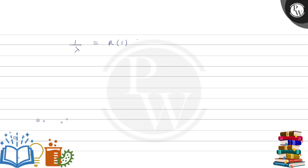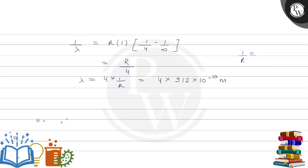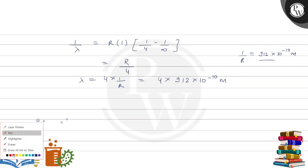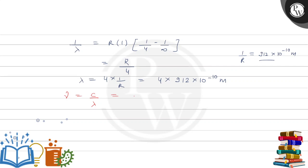We get 1/λ = R × (1/4 − 1/∞) = R/4. Therefore λ = 4/R. Putting the value of 1/R = 912 × 10⁻¹⁰ m, we get λ = 4 × 912 × 10⁻¹⁰ m. Now frequency ν = c/λ = (3 × 10⁸) / (4 × 912 × 10⁻¹⁰).